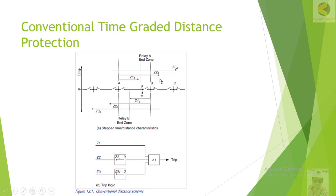If we set Zone 1 to 100% between A and B, and there is a fault near the breaker — within 5% of the line at the far end — the relay at Station A might overreach due to CT error, VT error, or variable arc resistance. It might trip in Zone 1 for a fault that is actually beyond the protected line, which is not required and will increase instability.